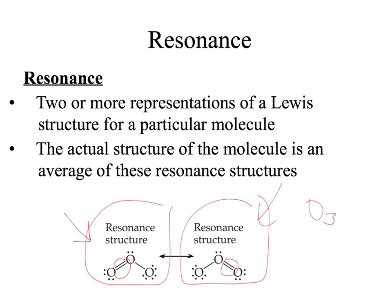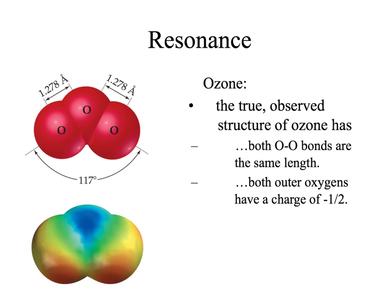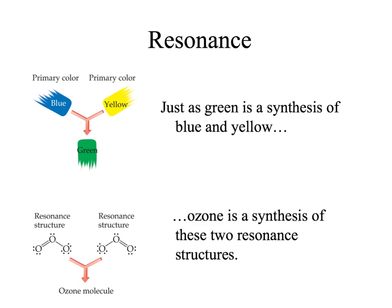If either one of these structures were correct by itself, we could tell from experimental data by measuring bond length — one bond would show up as slightly shorter than the other. But what we observe experimentally is that both bonds are of equal length. So neither structure alone can be correct, because if there were a true double bond, one bond would be shorter.